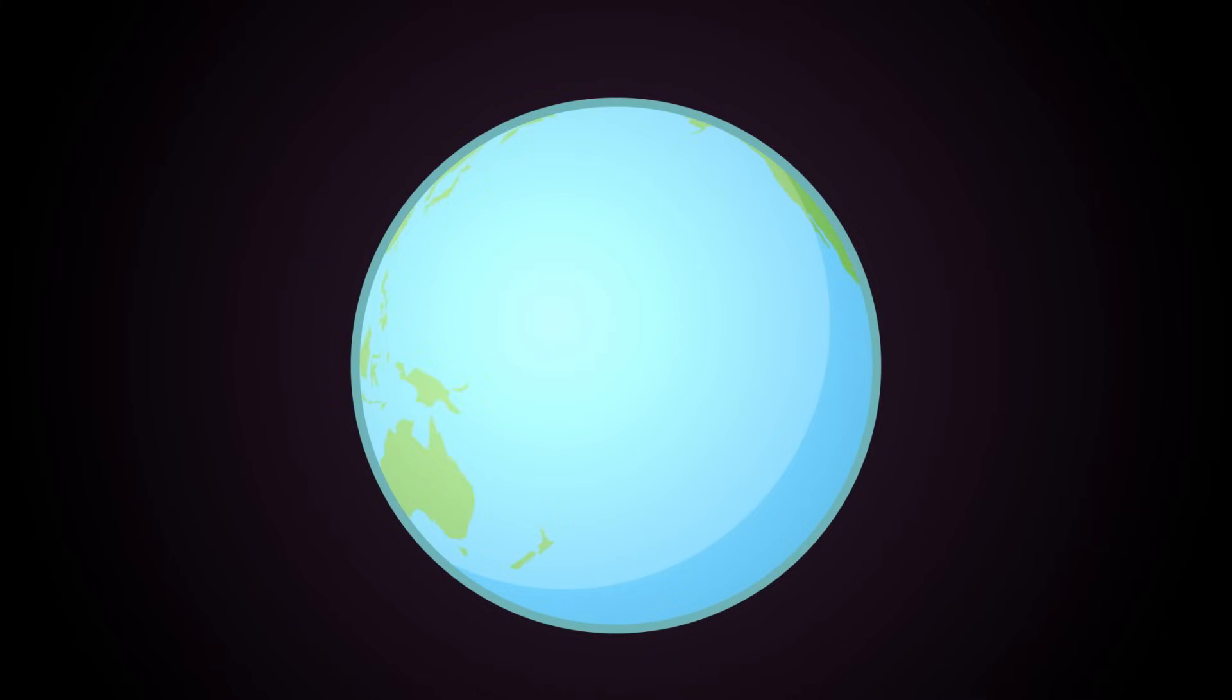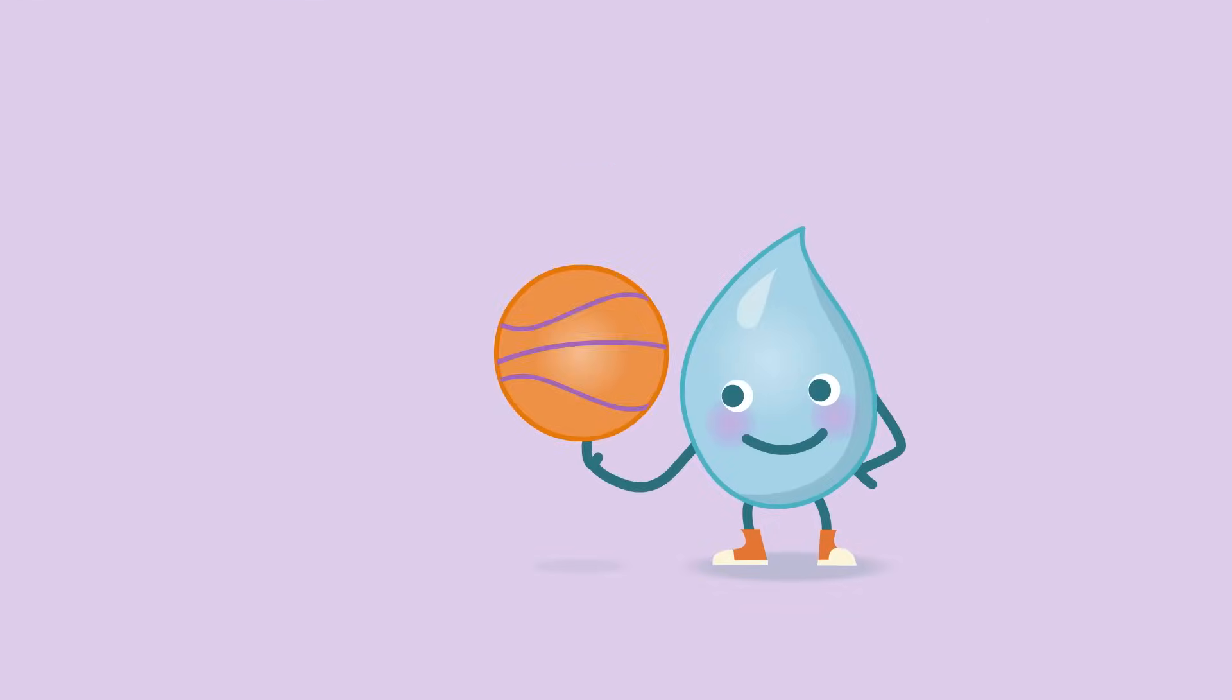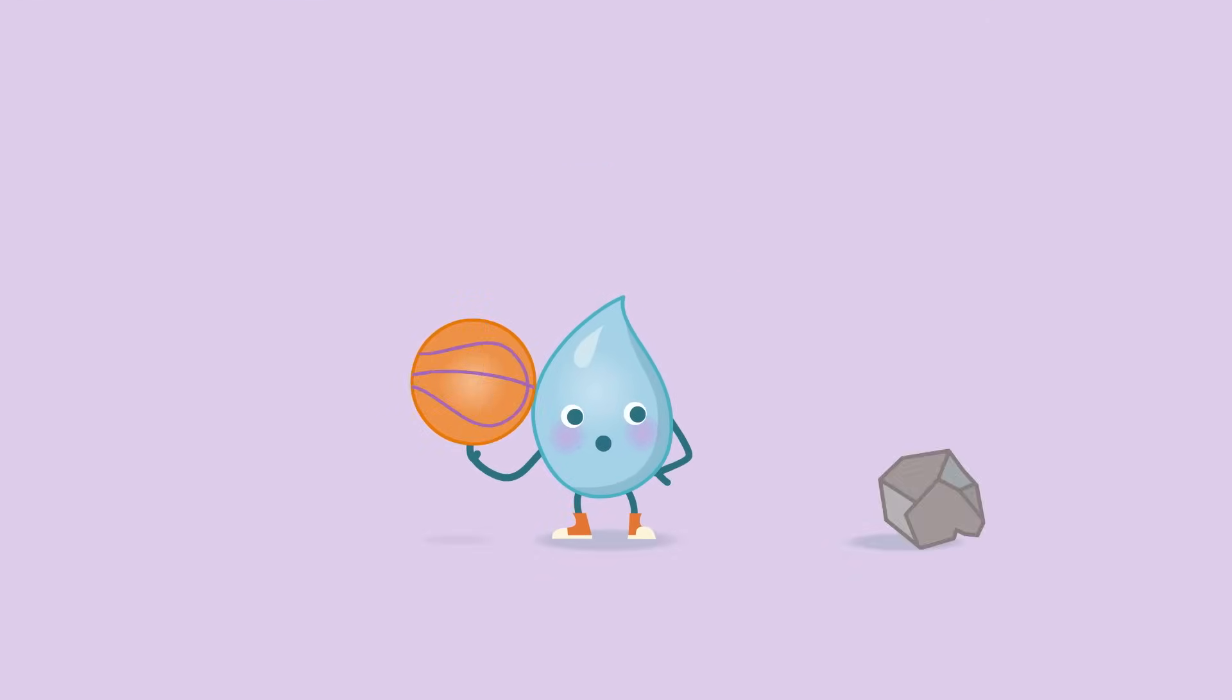On Earth, everything is made up of matter. It's everything around us. Heavy rocks are made of matter, and even things we can't see, like air, are made of matter.